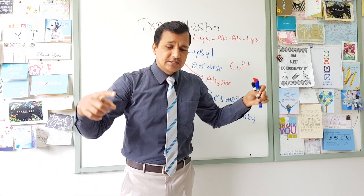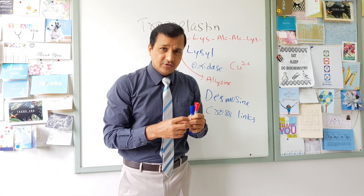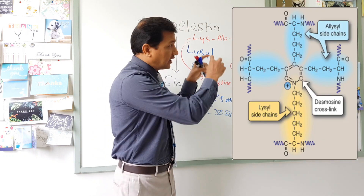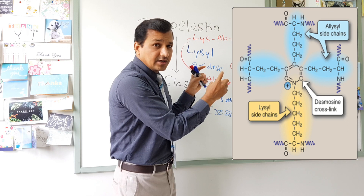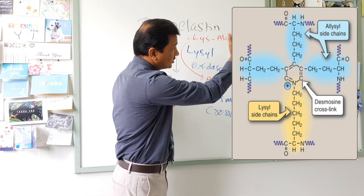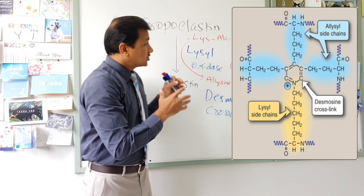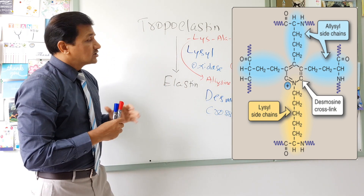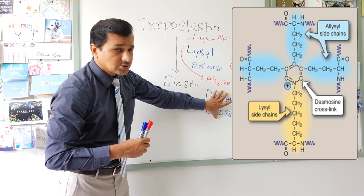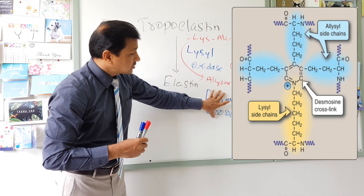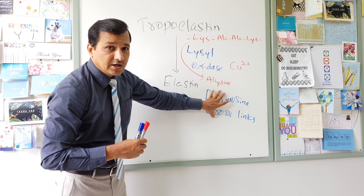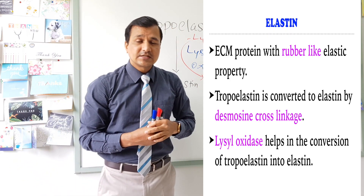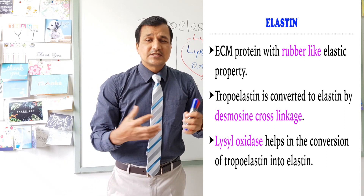Desmosine crosslinks form because three allysin residues interact with one lysine residue within the polypeptide chain, making an interconnected network as shown in the figure. That interconnected network gives rise to desmosine crosslinks, and desmosine crosslink formation is what converts tropoelastin into elastin.